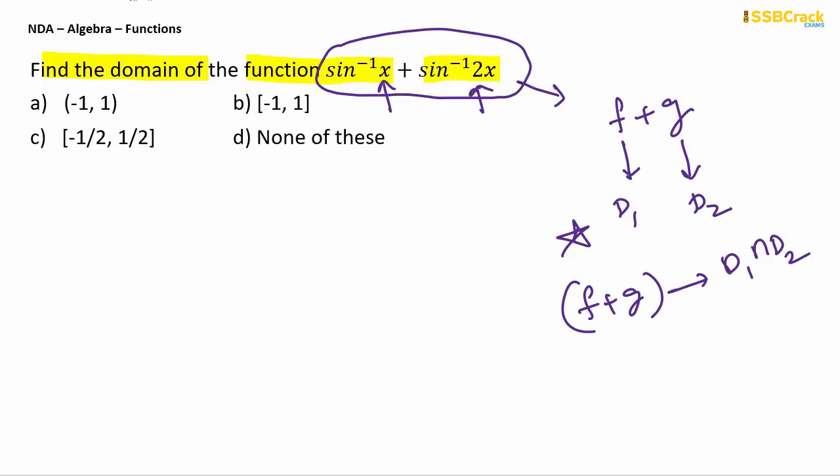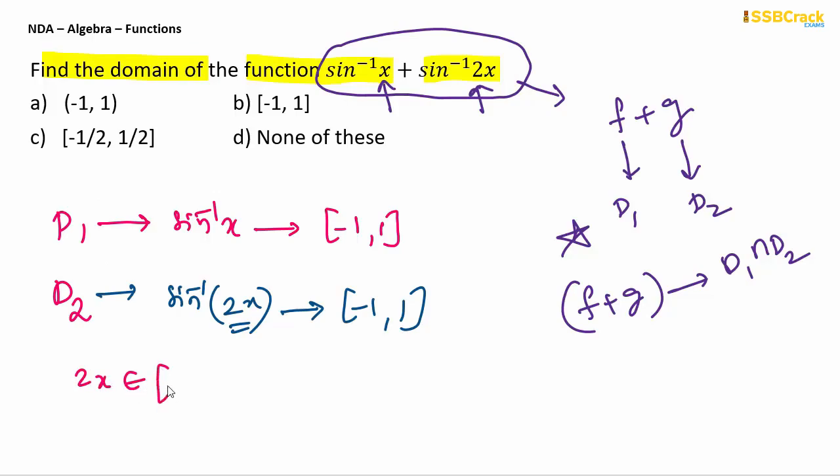For sine inverse x plus sine inverse 2x, we have to know D1 and D2. D1 we will take from sine inverse x - the domain, which is standard you should know, is minus 1 to 1 closed interval. And sine inverse 2x domain: 2x should belong to minus 1 to 1.